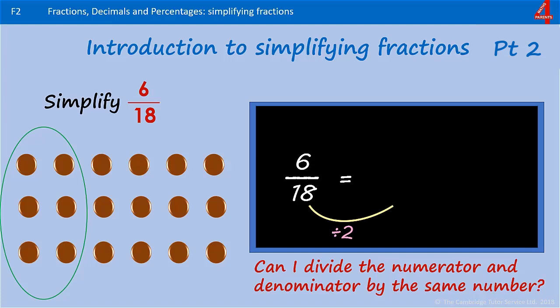18 divided by 2 is 9. 6 divided by 2 is 3. Now I have 3 ninths.